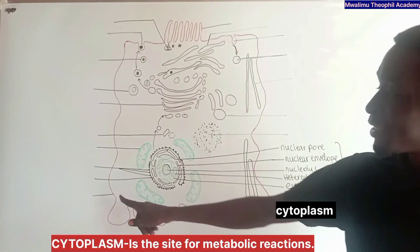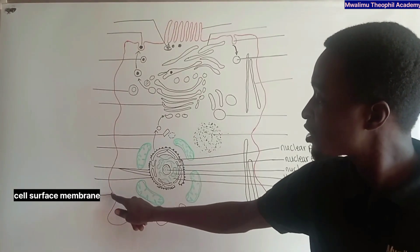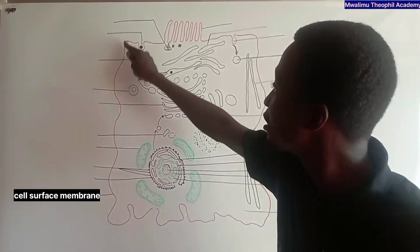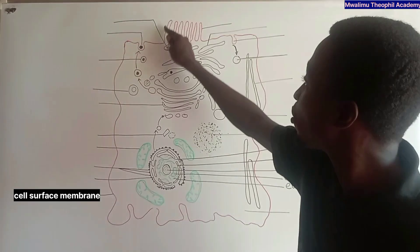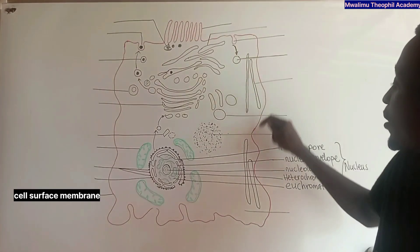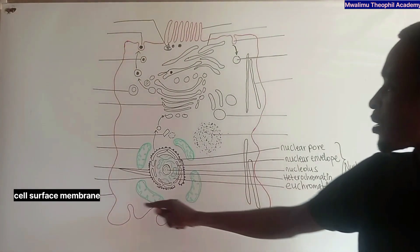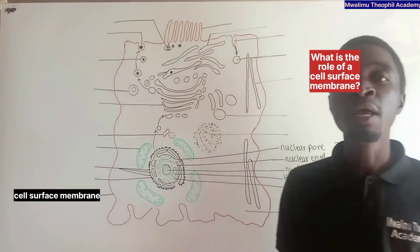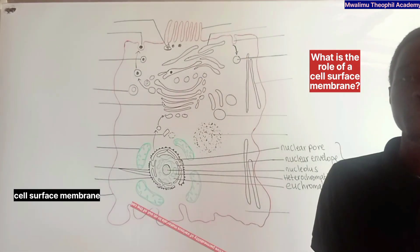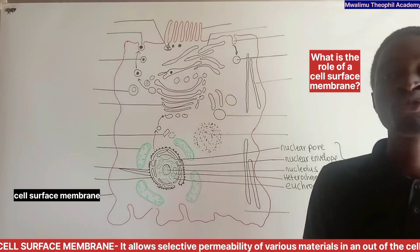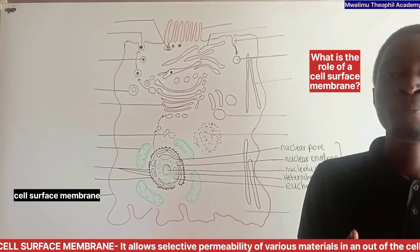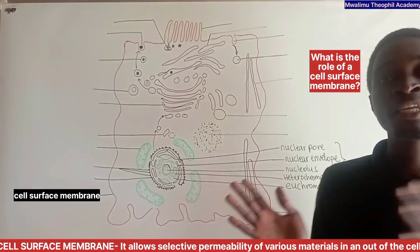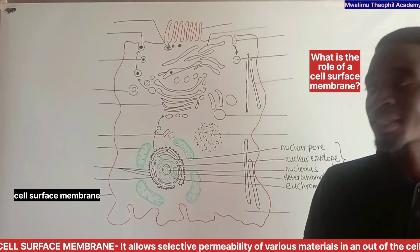Another part is the cell surface membrane, which is the boundary of the cell. The major role of the cell surface membrane is to allow selective permeability to various materials in and out of the cell.